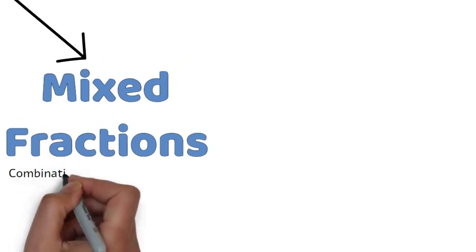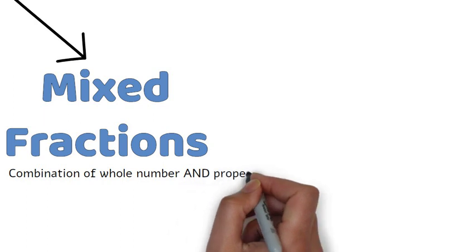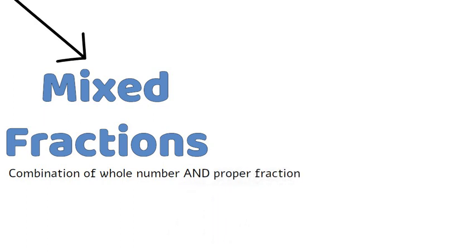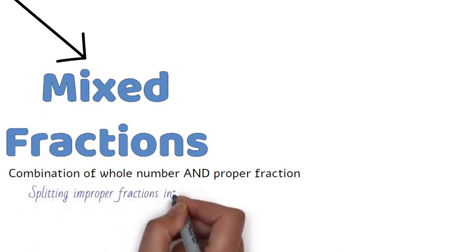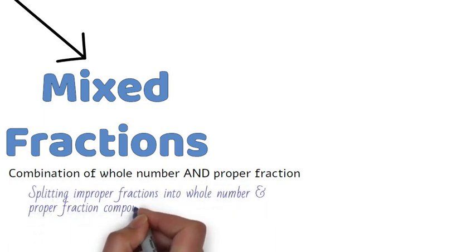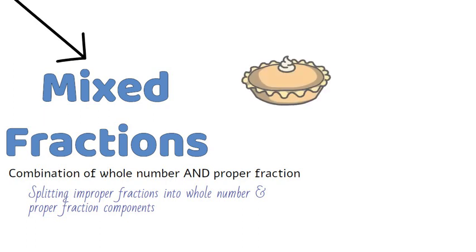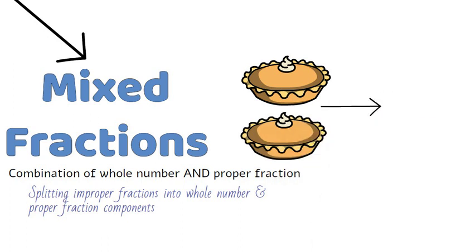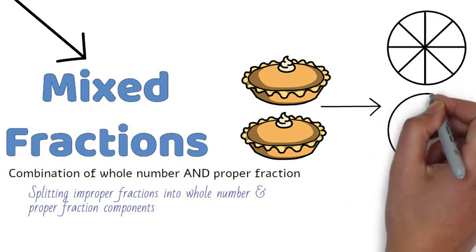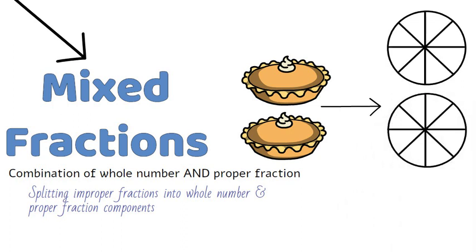A mixed fraction is a combination of a whole number and a proper fraction. A mixed fraction is a way of splitting an improper fraction into its whole number and proper fraction components. As we can see here, there are two pies where both have been divided into 8 equal pieces each, exactly as we had for the improper fractions.